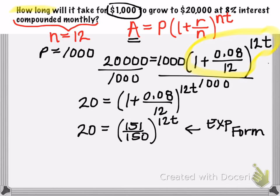And to do this, remember you always just begin with the base. The base will become the base in the logarithmic form. So when you convert this, you'll have log base 151 divided by 150 of 20 is equal to 12t.